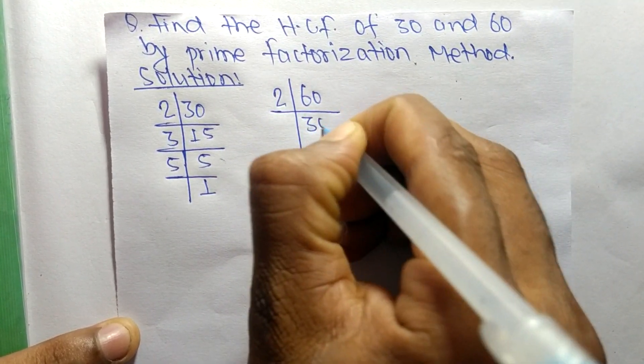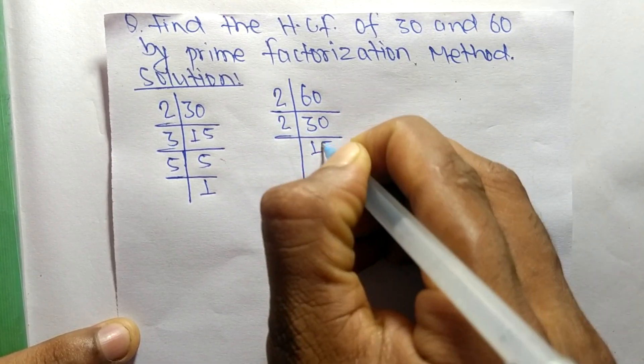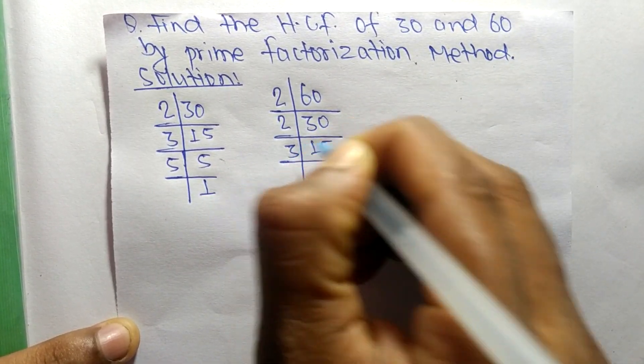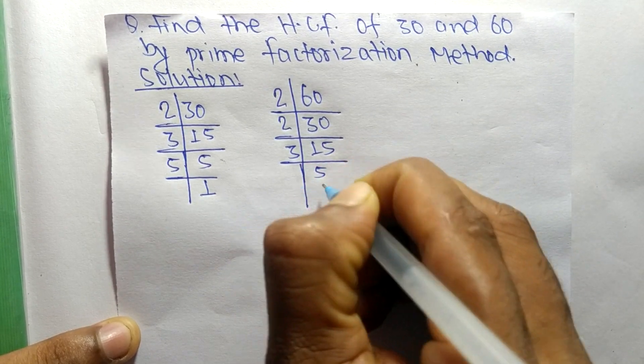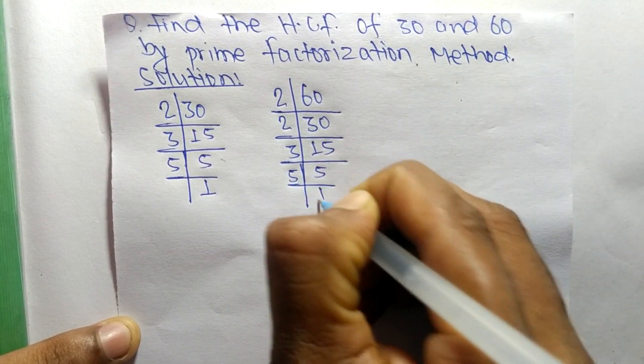The prime factors of 60 are: it is 2 times 30 equals 60, 2 times 15 equals 30, 3 times 5 equals 15, and 5 times 1 equals 5.